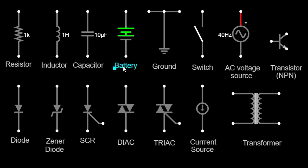Now let's move on to the battery symbol. It represents a power source in a circuit. Batteries provide a steady voltage to power electronic devices. The positive terminal is typically marked with a longer line or a plus sign, while the negative terminal is represented by a shorter line or a minus sign.